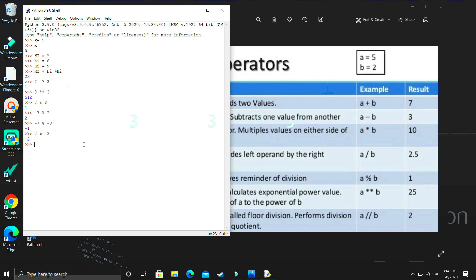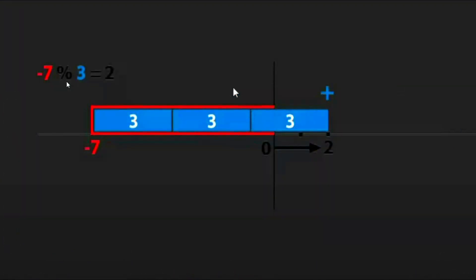As you can see on screen, −7 % 3 = 2. The most important rule is that the sign of the remainder will be the same as that of the divisor. If the divisor is positive, the remainder is positive; if the divisor is negative, the remainder is negative. To visualize this: imagine a glass whose depth equals the magnitude of the dividend (7). We fill it with ice cubes where each cube equals the divisor (3). One cube fills 3, two fill 6, and the third cube overflows by 2 — so 2 is our remainder, and it is positive because the divisor is positive.